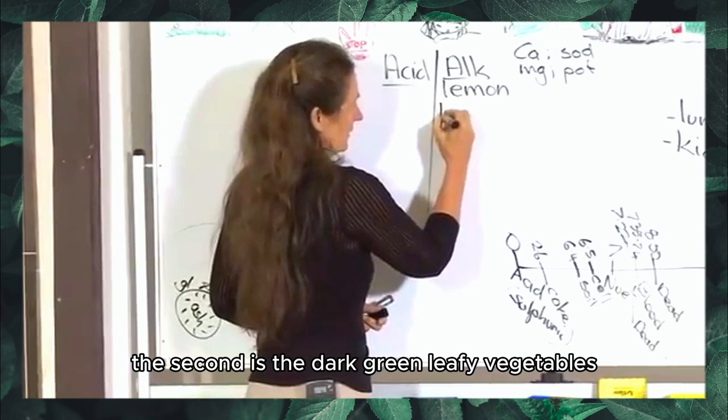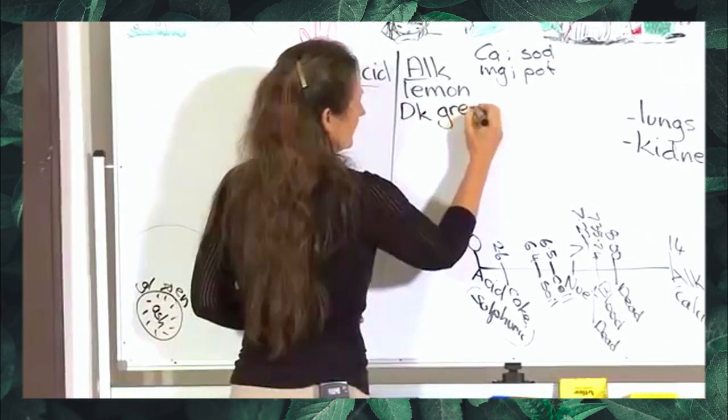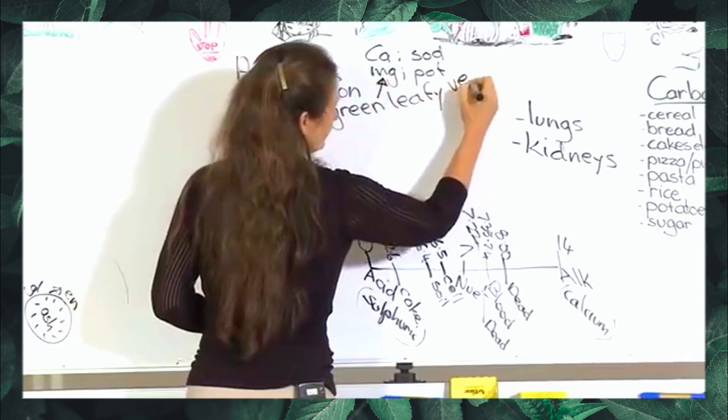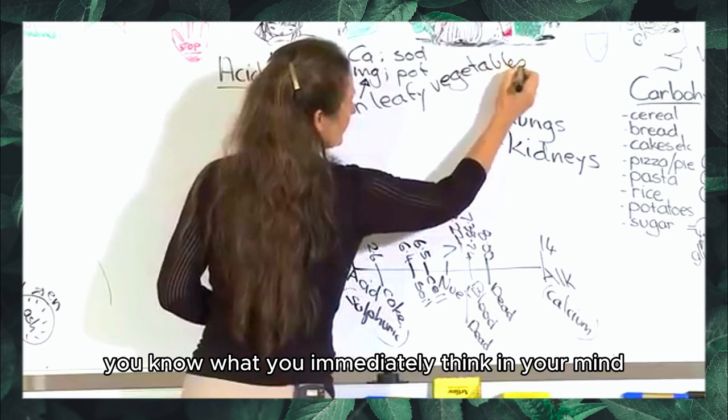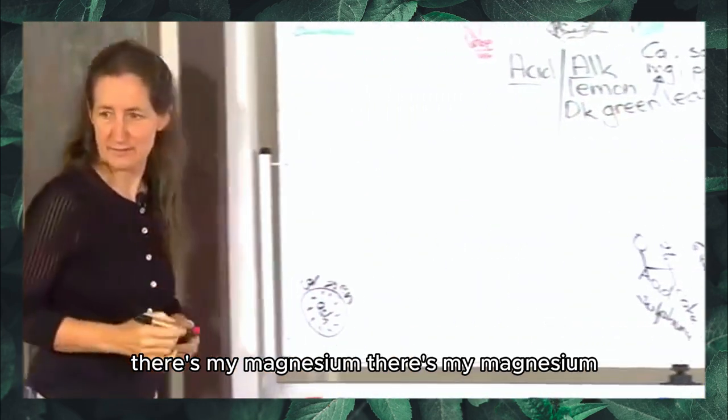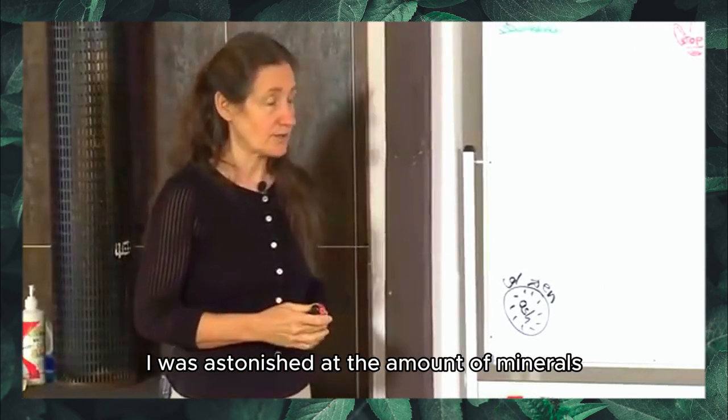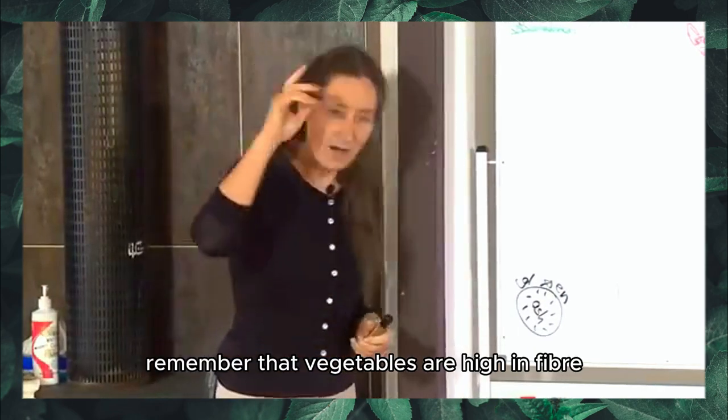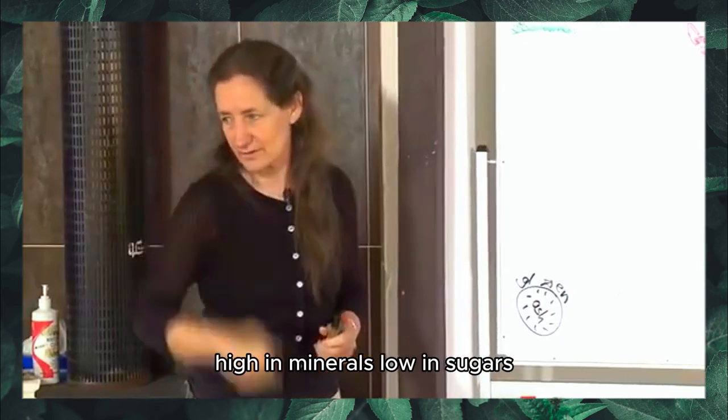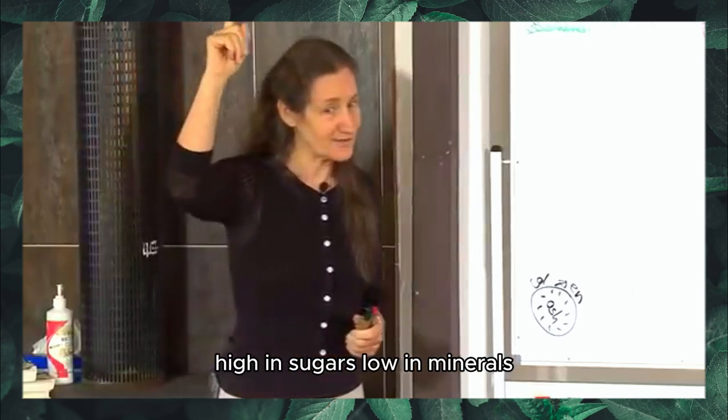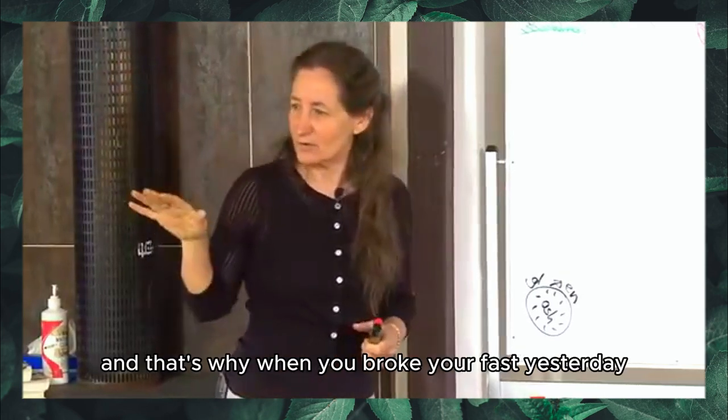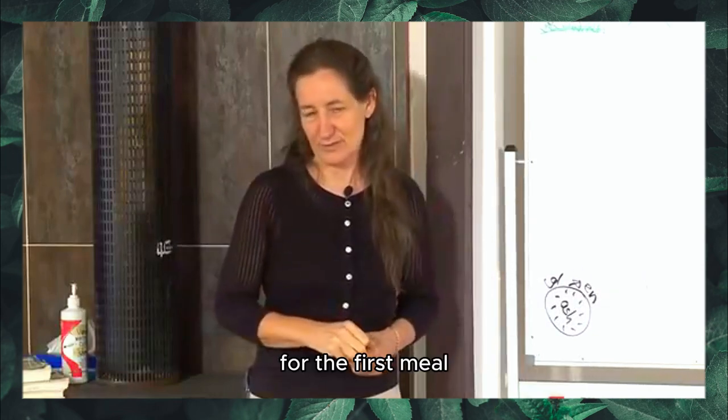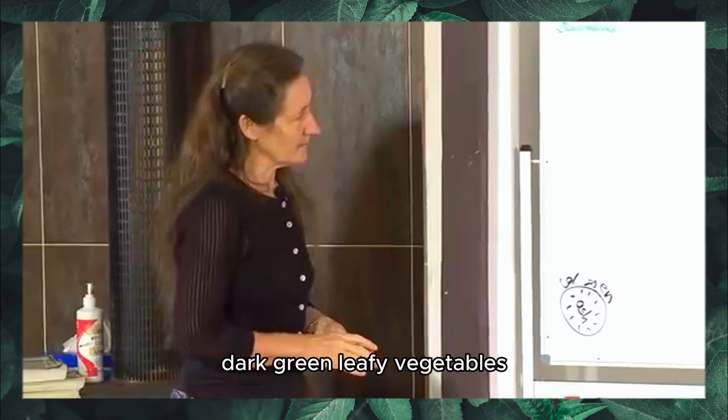It's to do with the mineral content of the food. So lemon is high in your alkaline minerals which are calcium, magnesium, sodium and potassium. The second is the dark green leafy vegetables. Dark green leafy vegetables are the highest form of magnesium. When you see dark green veggies, you immediately think, there's my magnesium.